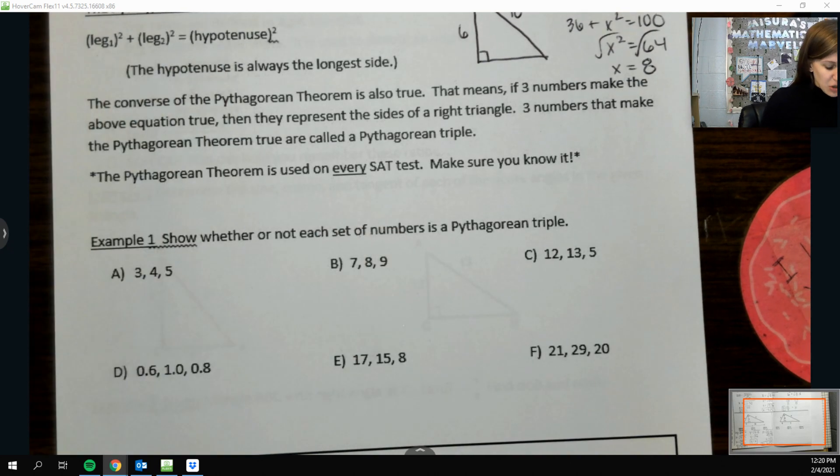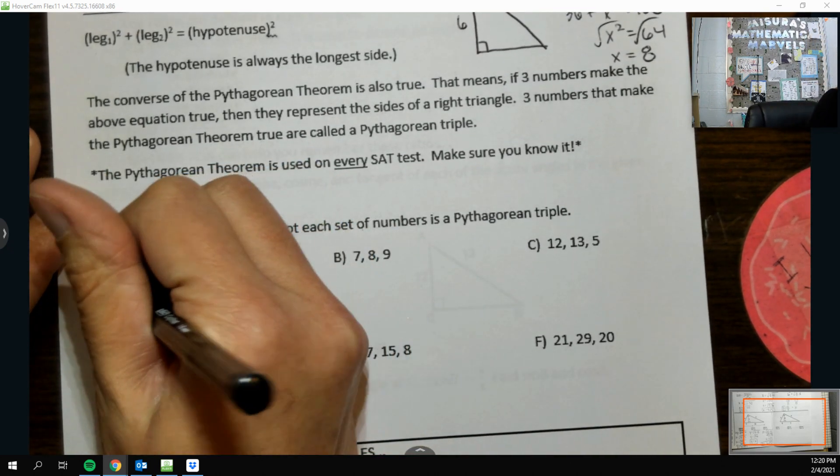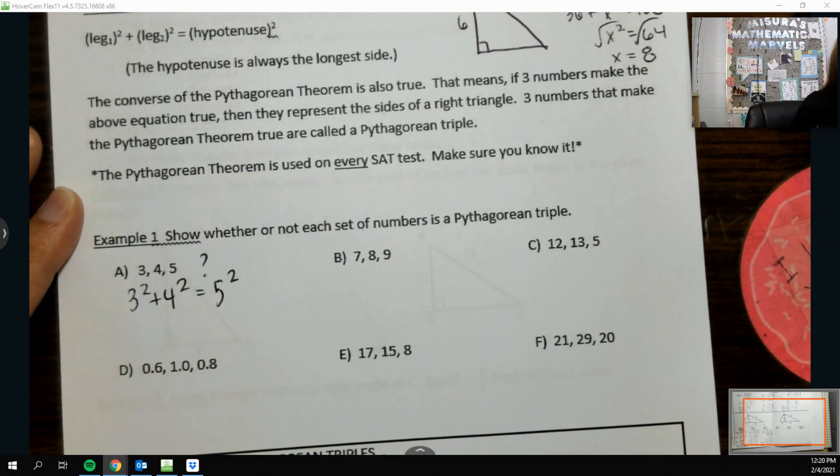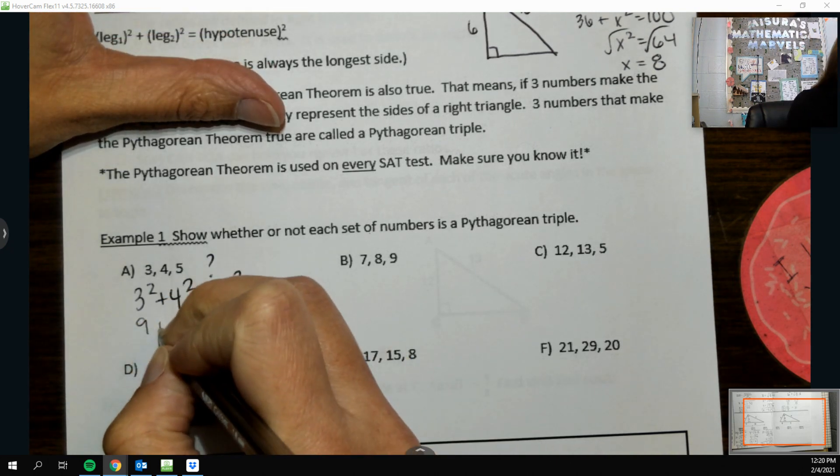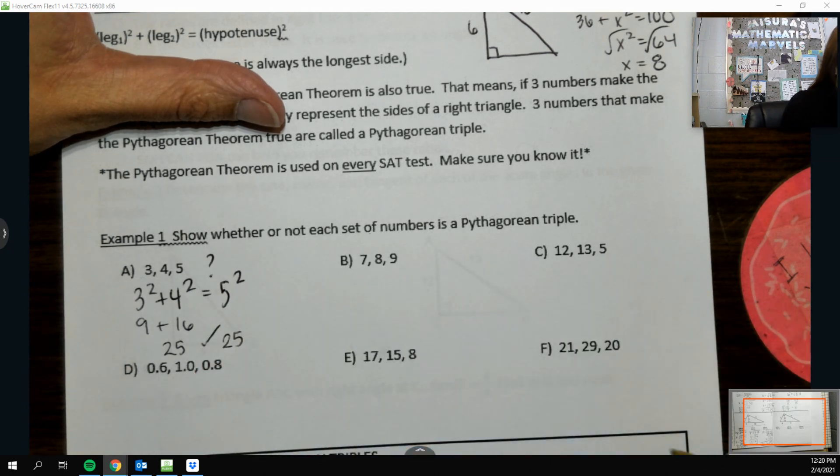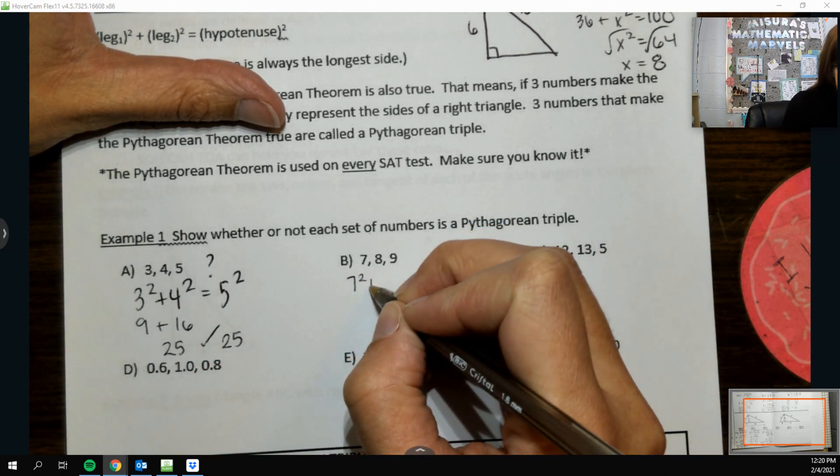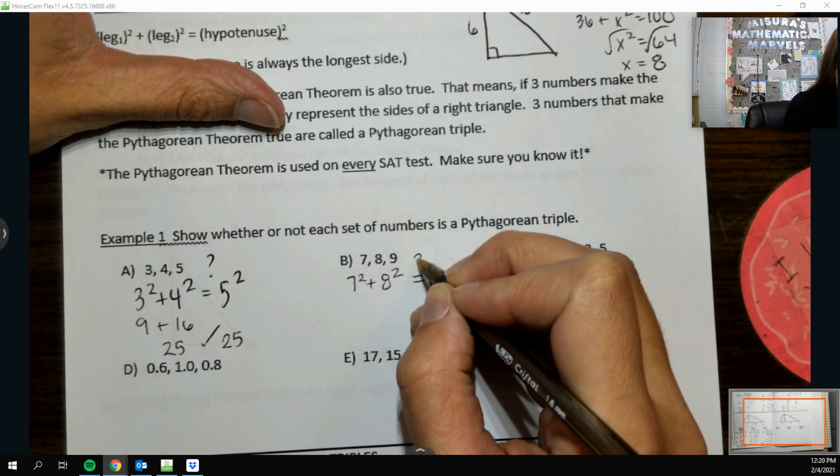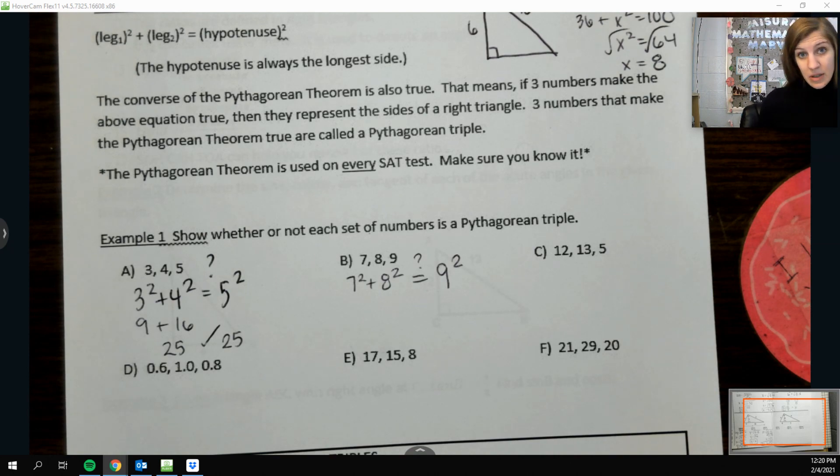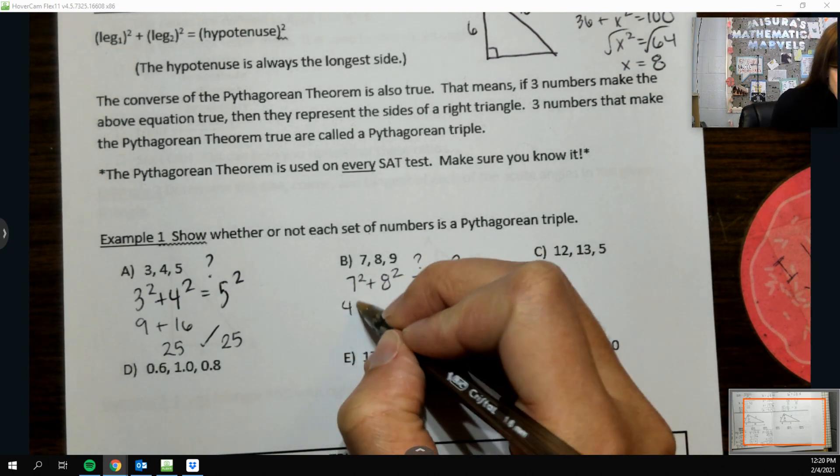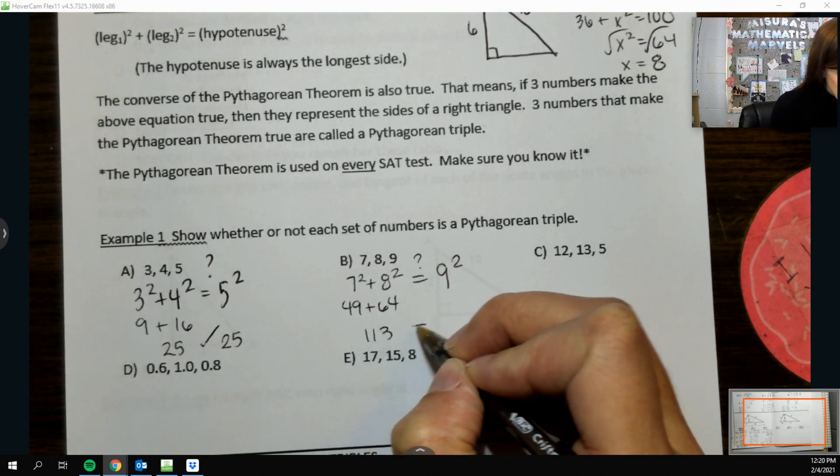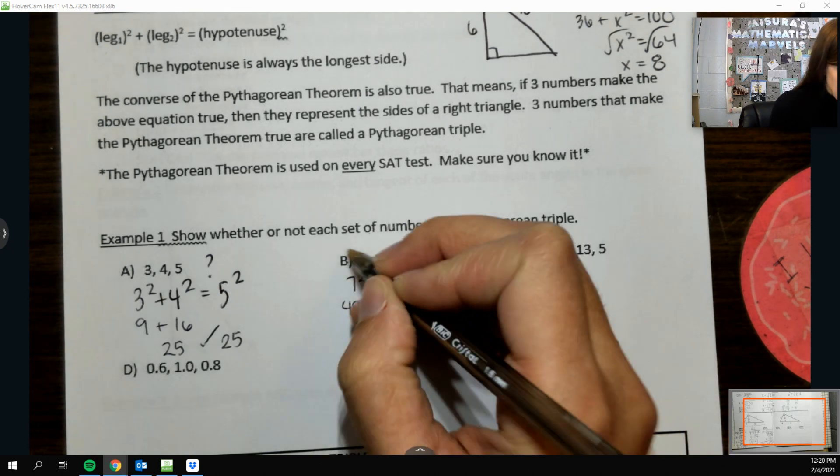So we can show whether or not each of these sets down here is a Pythagorean triple by just putting them into that good old Pythagorean theorem. And it's really a question of if they're equal or not. So 9 and 16 is 25. And so is that. So it checks out. The largest number has to be your potential hypotenuse number because the hypotenuse is the longest side. Here we got 49 and 64, which when we add them up is 113, which is not 81. So this is not a Pythagorean triple.